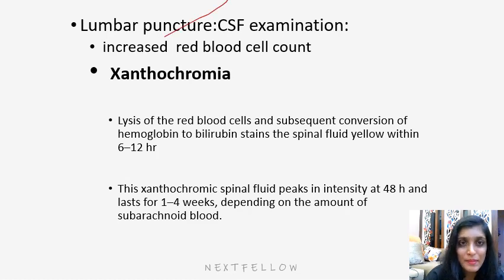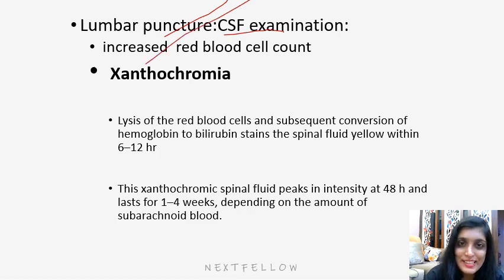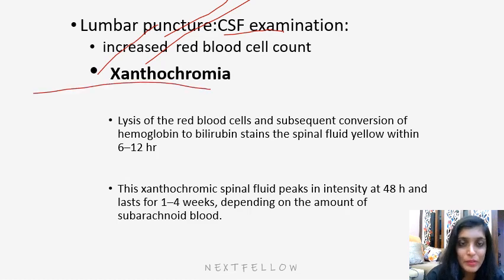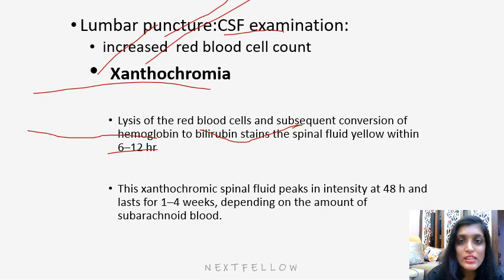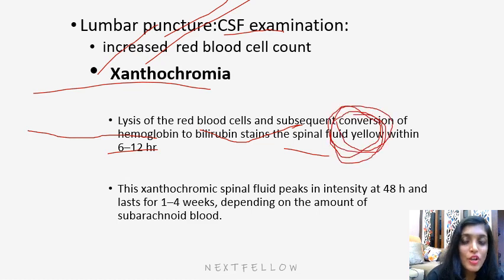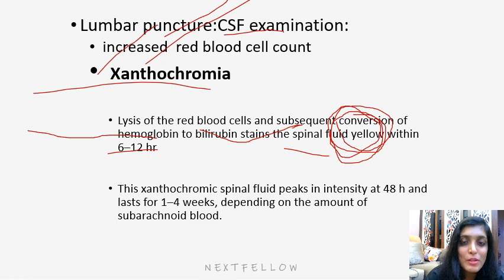On lumbar puncture and CSF examination, since there is bleed in the subarachnoid space, there will obviously be an increase in RBC count. There will also be xanthochromia — yellowish discoloration of the CSF fluid — due to lysis of red blood cells and subsequent conversion of hemoglobin to bilirubin, which stains the CSF within 6 to 12 hours. The xanthochromic spinal fluid usually peaks in intensity and remains for around 1 to 4 weeks, depending on the amount of subarachnoid bleed.